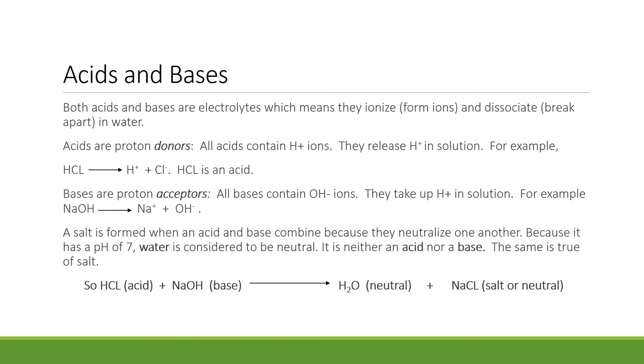Both acids and bases are electrolytes, and that means they ionize, or they form ions, and dissociate, break apart, in water. Acids are proton donors. All acids contain H plus ions. They release H plus in solution. For example, the acid HCl ionizes into H plus and Cl minus. Bases are proton acceptors. All bases contain OH minus ions. They take up H plus in solution. For example, the base NaOH ionizes into Na plus and OH minus when put in water.